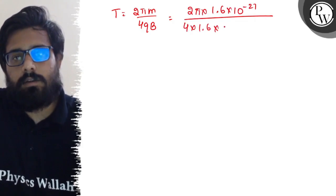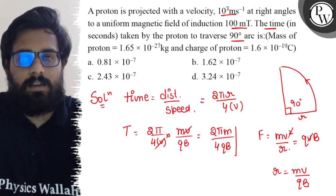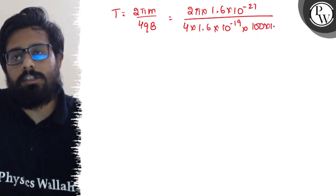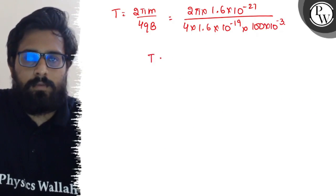2π into m, the value is 1.65 × 10^-27 kg, divided by 4 into charge 1.6 × 10^-19 coulomb into B. The value of the magnetic field is 100 microtesla, so 100 × 10^-6 tesla.